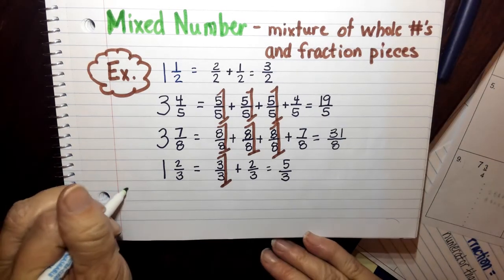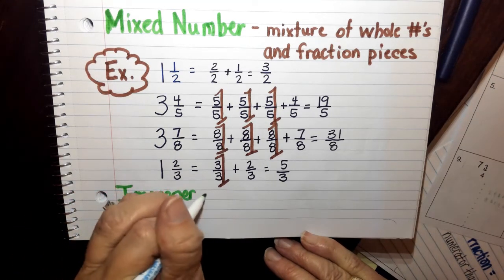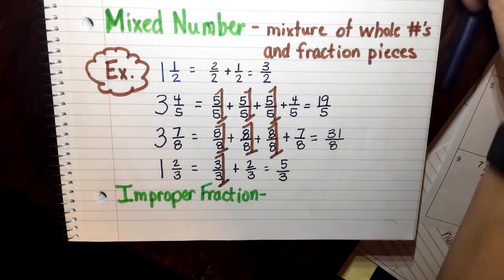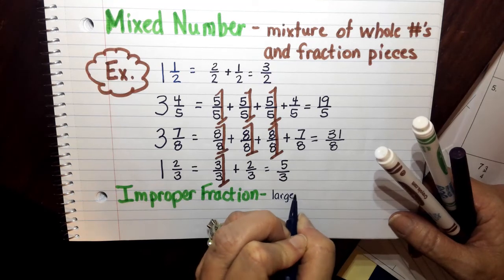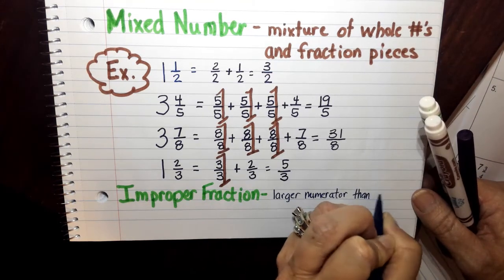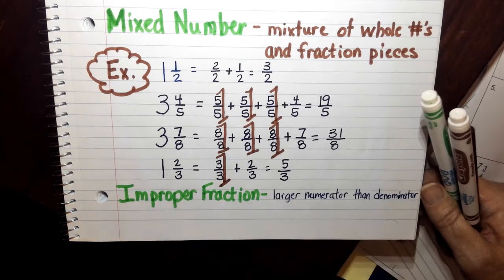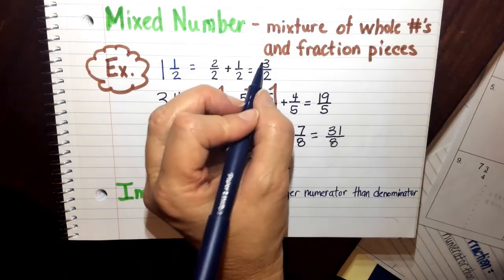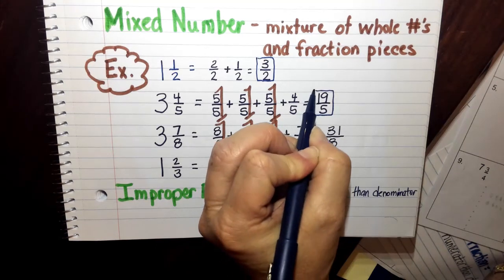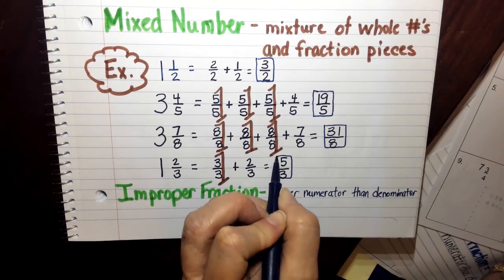Very quickly before I have you finish that paper. You're going to need to add this term. This term is called improper fraction. Well, an improper fraction is when you have a larger numerator than denominator. Which is what we have here. This is an improper fraction. 3/2. 19/5. That is an improper fraction. 31 over 8 is an improper fraction. And 5 over 3 is an improper fraction.